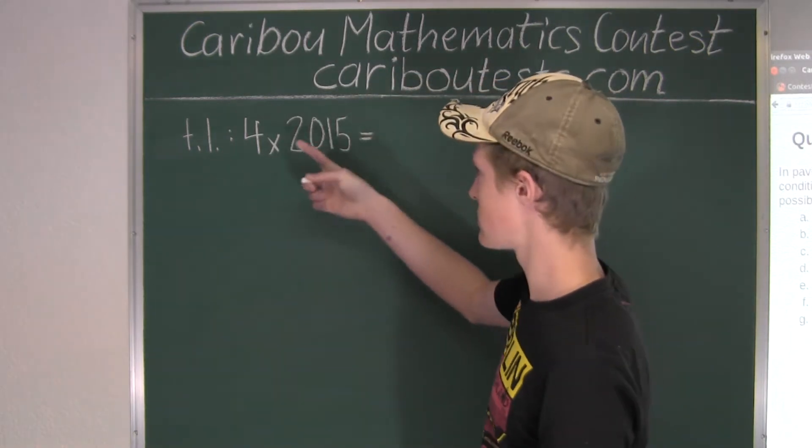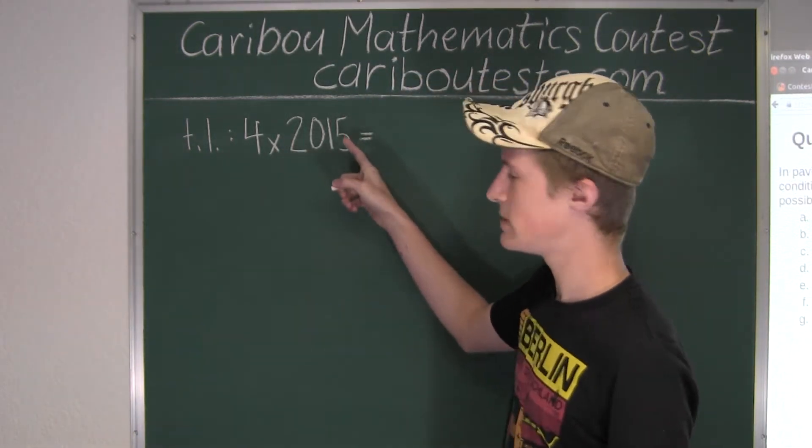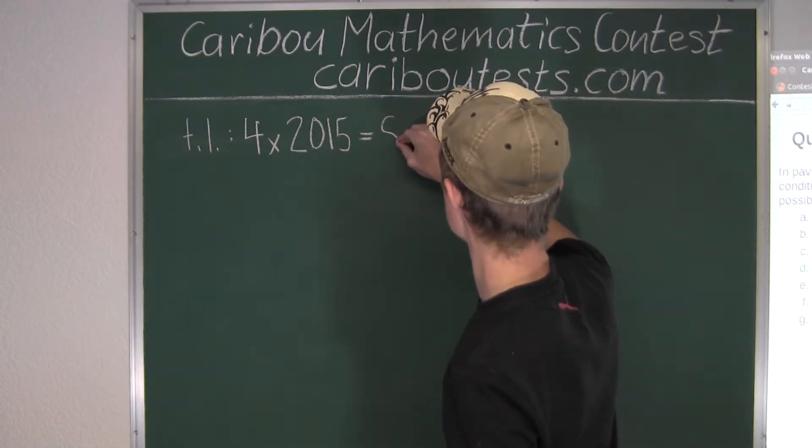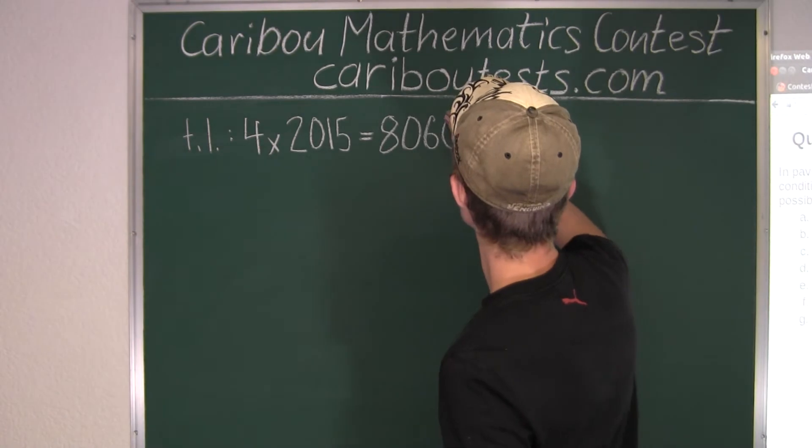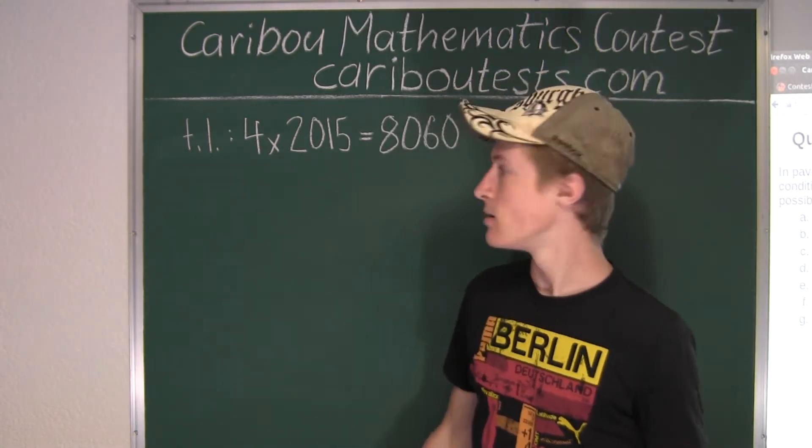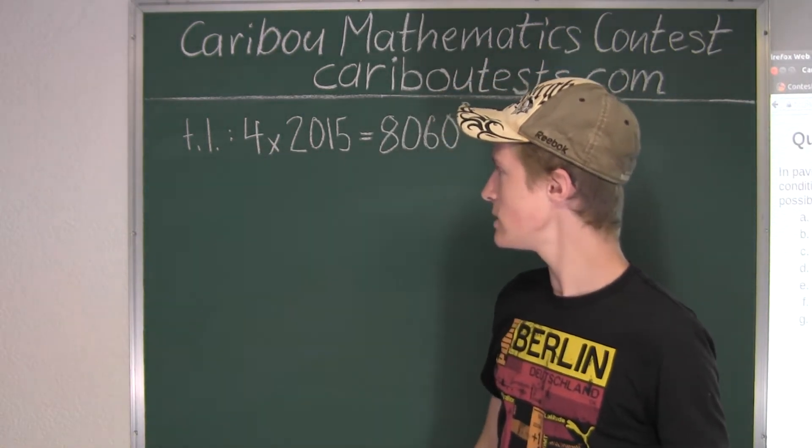4 times 2000 is 8000, 4 times 15 is 60, so 8,060. So now we've found the total length of all edges.